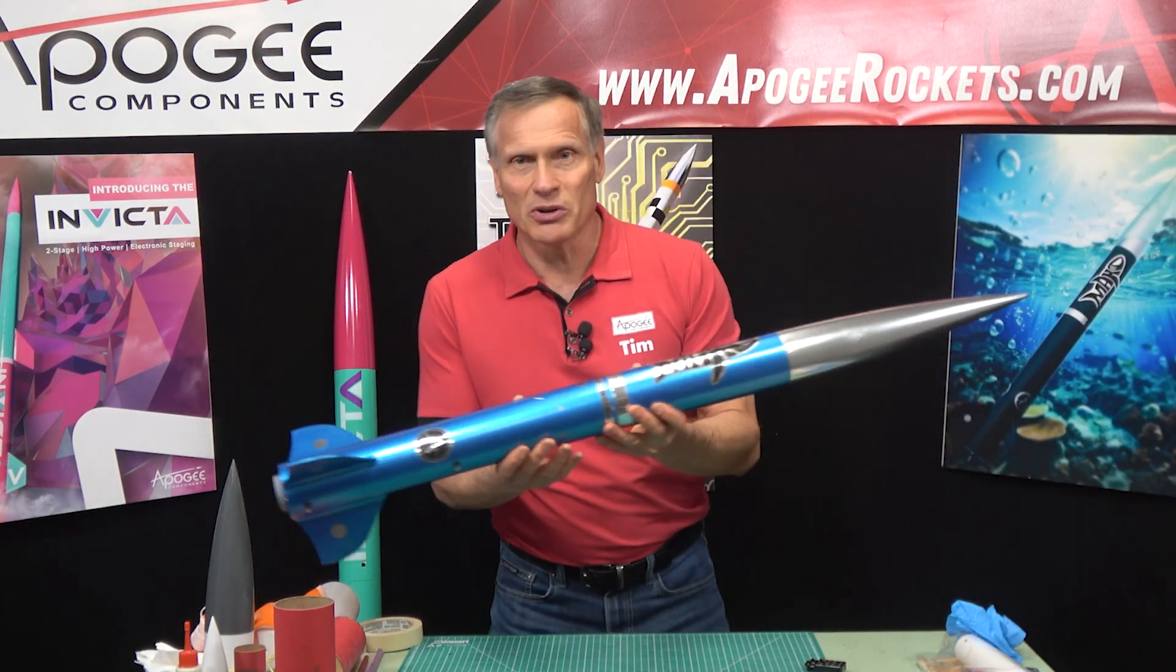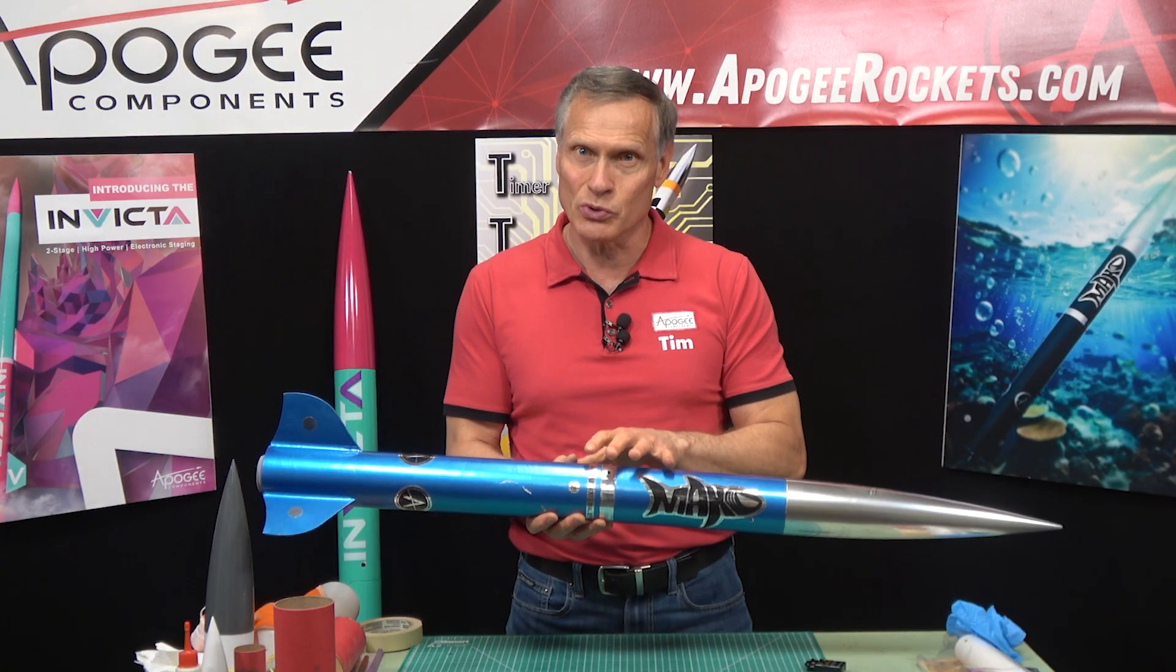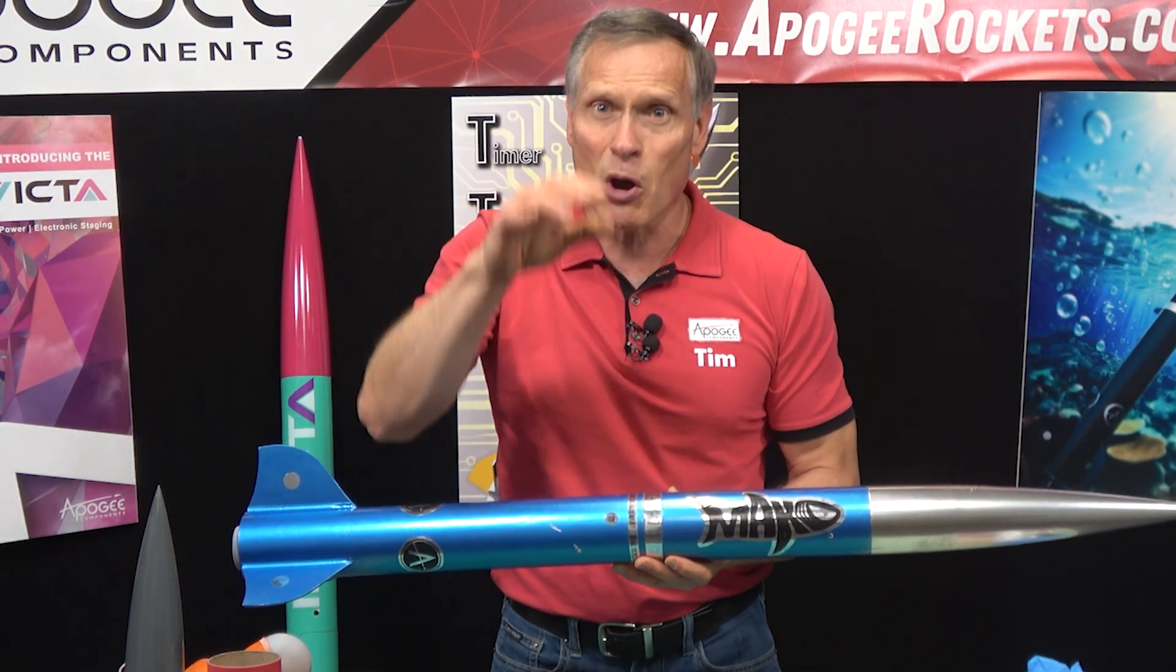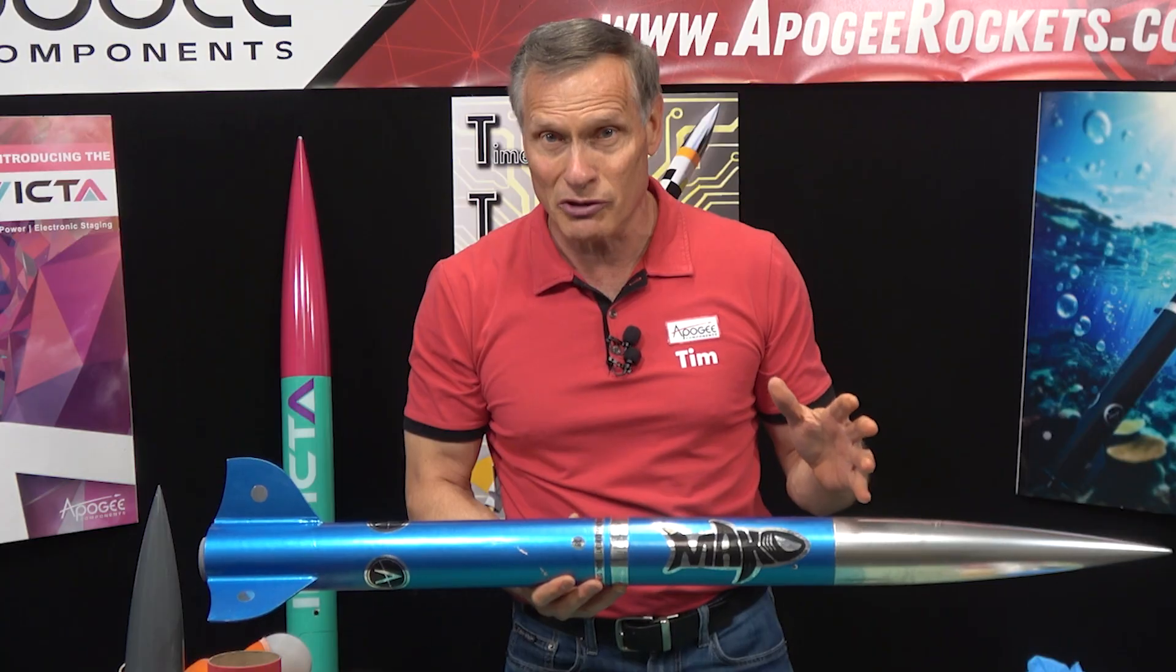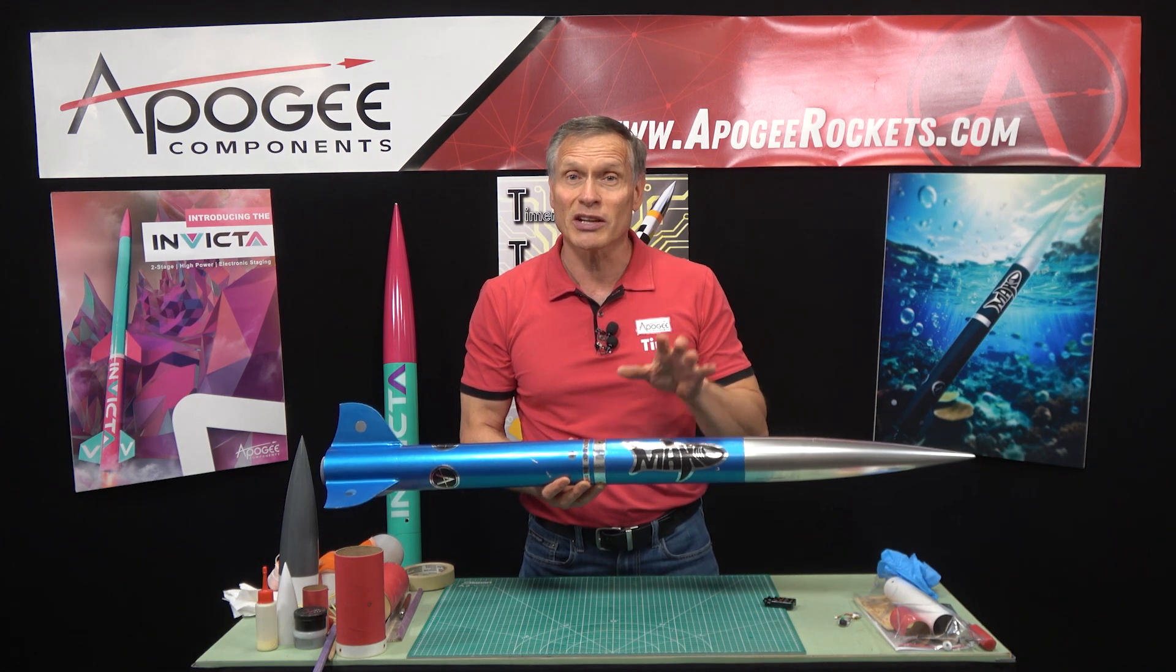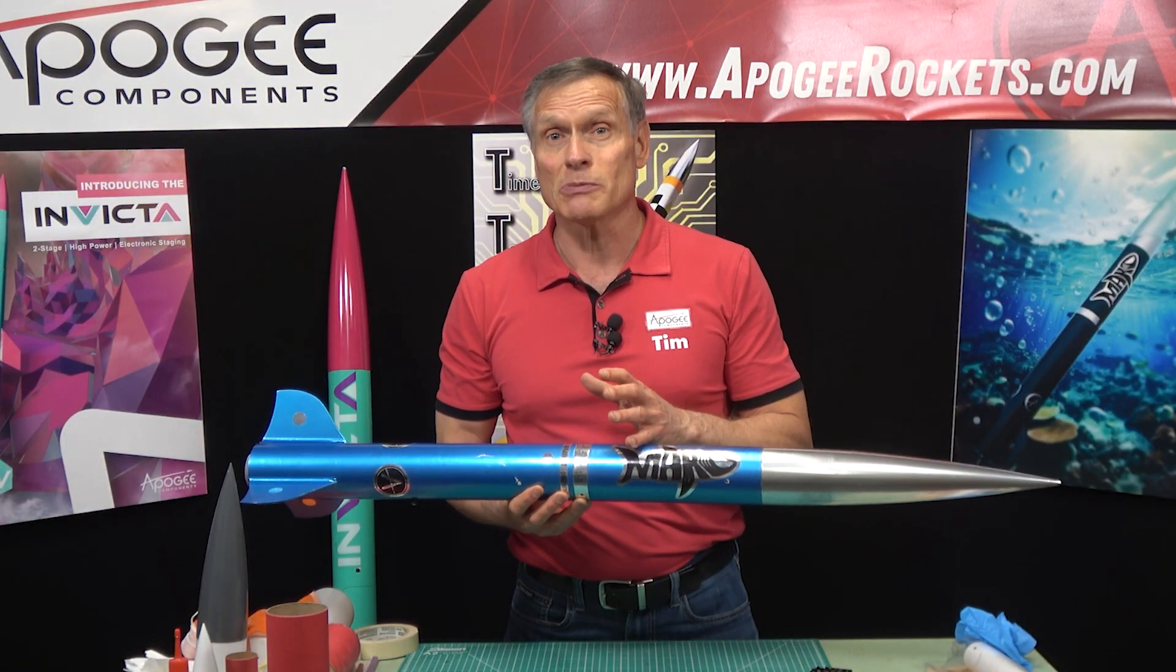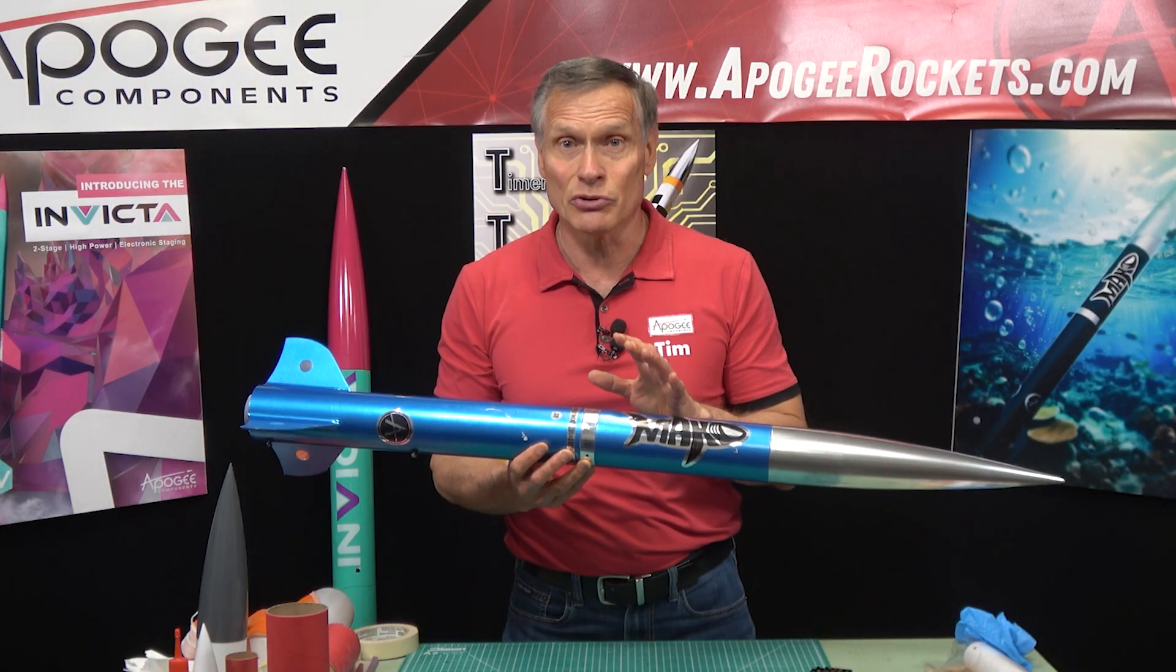Over here I've got a rocket called Mako and we set this one up for dual deployment. In dual deployment we want to eject two parachutes at different times in the flight. First we're gonna eject a small parachute right at apogee which is the highest point in the flight. It's a small parachute so the rocket's gonna come flying down really fast and the purpose of this is so that it doesn't drift very far. But it's coming down too fast to land safely. So at a lower altitude we're going to eject a big parachute to slow it down for the final landing. So the overall purpose is to get the rocket to land close to the launch pad so that you don't have to walk very far to get it and you have a less chance of losing your rocket.